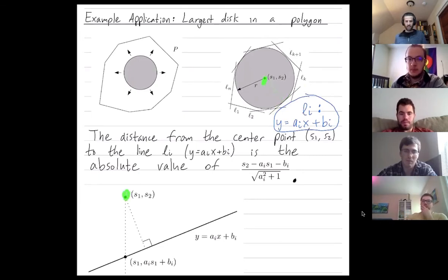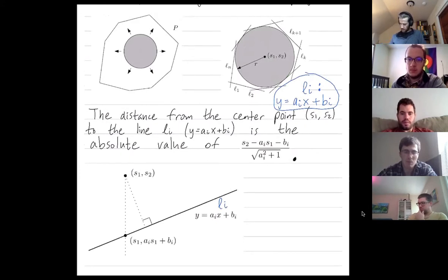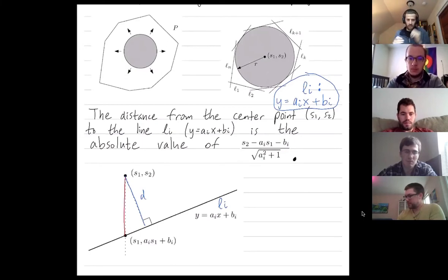So here's our center point right there. And this is our ith line, li, given by y equals a i x plus b i. We want to find an equation for this distance, which I'll call d. We know this distance in red, that's just the discrepancy between the y-coordinates. So the y-coordinate of the top point is s2, and the y-coordinate of the bottom point on that red line segment is a i s1 plus b i. So I subtract b i because I'm looking at the difference between those two y-coordinates.